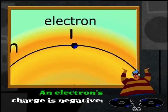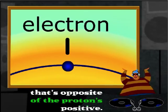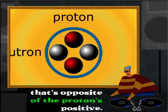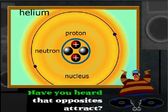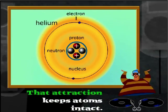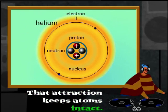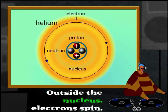An electron's charge is negative. That's opposite of the proton's positive. Have you heard that opposites attract? That attraction keeps atoms intact. Outside the nucleus,